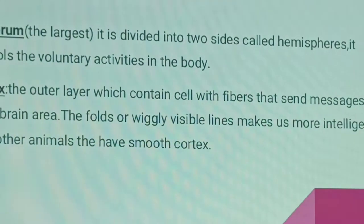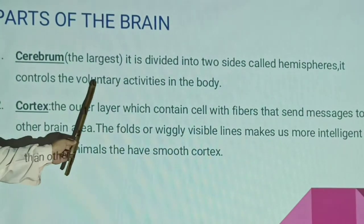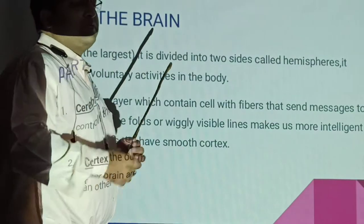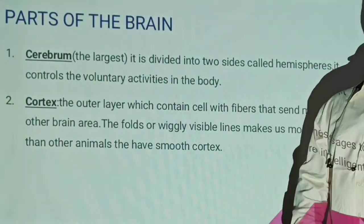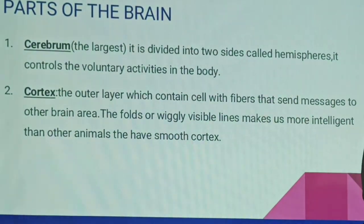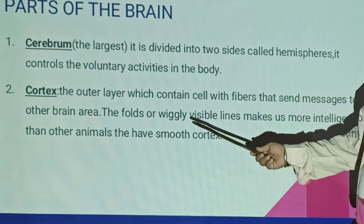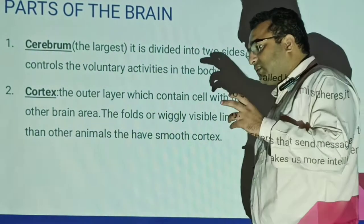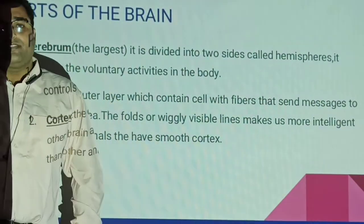The cerebrum is the largest part of the brain, divided into two hemispheres, and is responsible for voluntary activities. The cortex is the outer layer of cells that sends messages to other brain areas. The folding visible in the cortex allows humans to be more intelligent than animals with a smooth cortex — more folding means higher cognitive function.